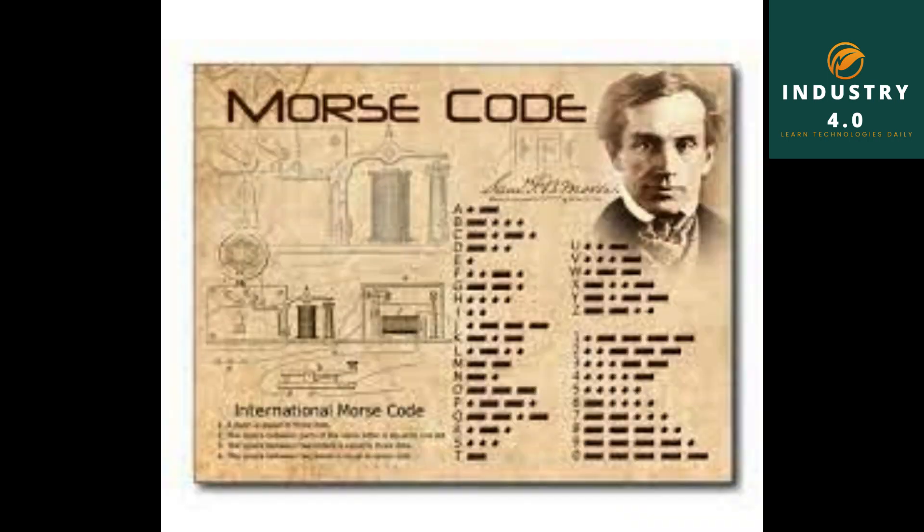How was Morse code invented? One of the Morse code structures was invented in the United States by American artist and inventor Samuel F. B. Morse during the 1830s for electric telegraphy. A variation known as the International Morse code was devised by a convention of European nations in 1851 to account for letters with diacritic marks.